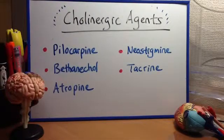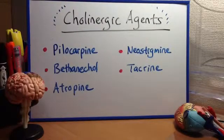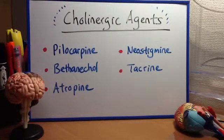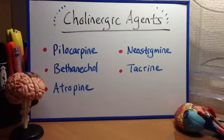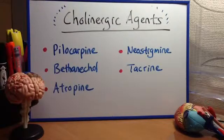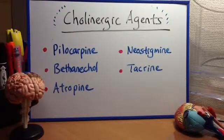The first agent is pilocarpine. Mechanism of action: pilocarpine is a muscarinic M1, M2, M3 receptor agonist, which acts mostly at the M3 receptor. Pilocarpine causes contraction of the sphincter muscle of the iris and contraction of the ciliary muscle. Clinical uses: for both narrow and wide-angle glaucoma.